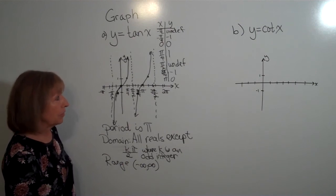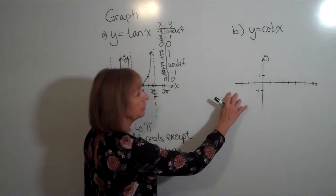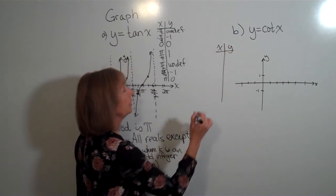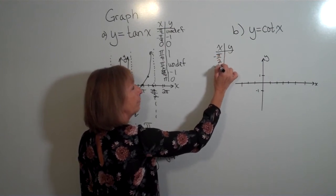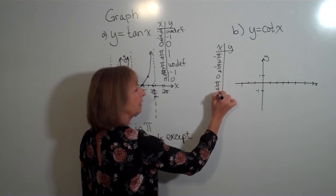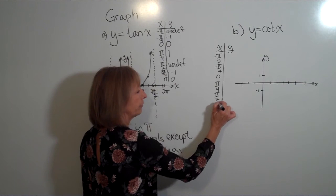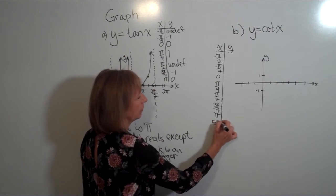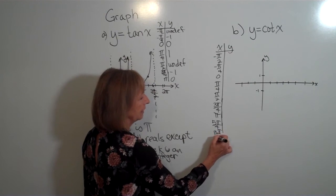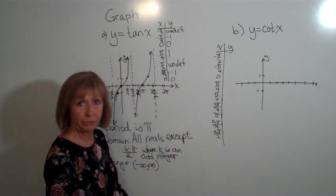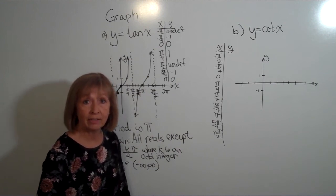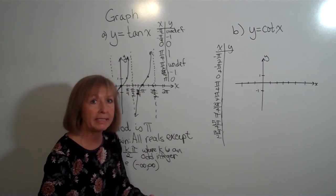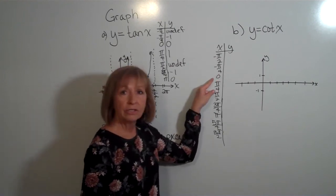Now let's look at y equals cotangent of x. We'll again make a table of values with angles: negative pi over 2, negative pi over 4, 0, pi over 4, pi over 2, 3 pi over 4, pi, 5 pi over 4, and 3 pi over 2. Remember, the cotangent of an angle is the cosine of the angle divided by the sine of the angle. We'll do the positive angles first and then come back to do the negative angles.